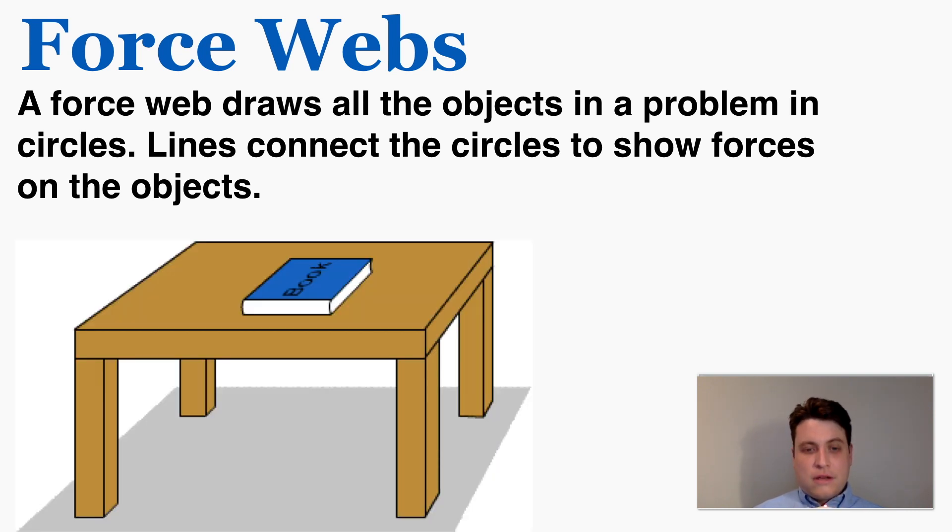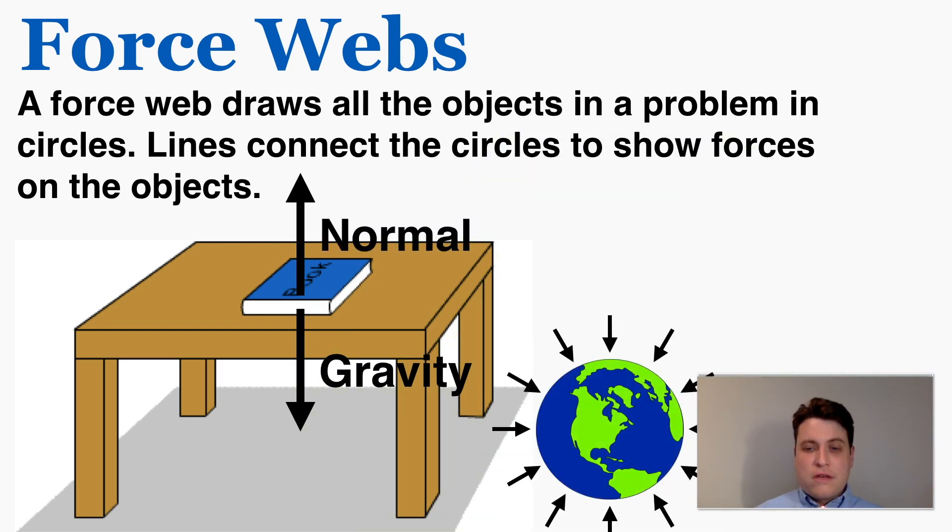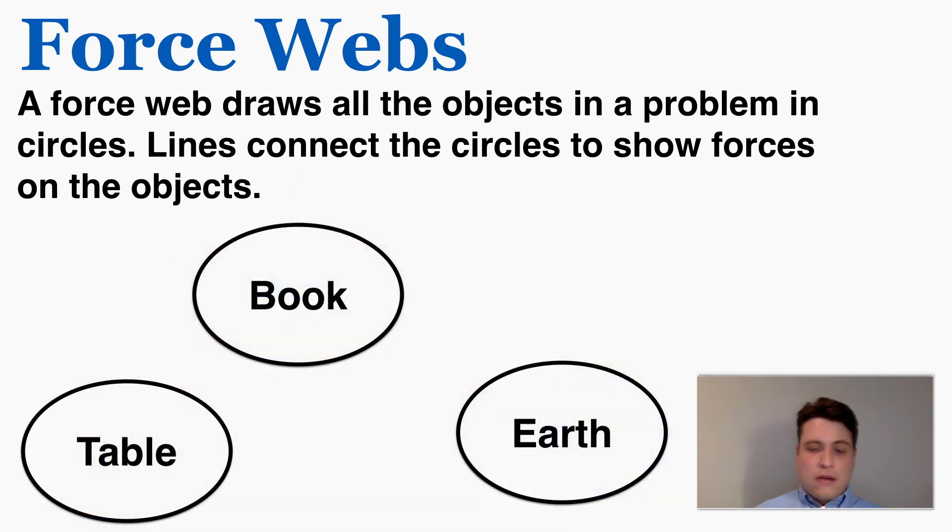Here we have a book sitting on a table. So we know that the force of gravity is pulling the book down, and because the table is a surface, it's supporting the book by putting a normal force up on the book. So I can see here that because the earth is still creating that force of gravity, that's going to be one of the objects in my problem, and the other object is going to be the table and obviously the book itself. So I can just connect these with the forces that they're putting on the book.